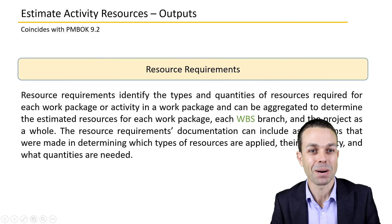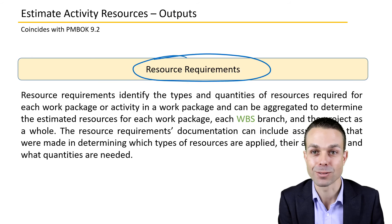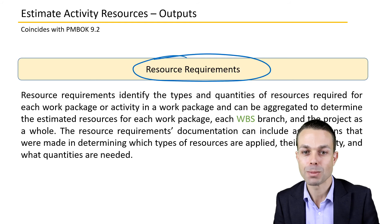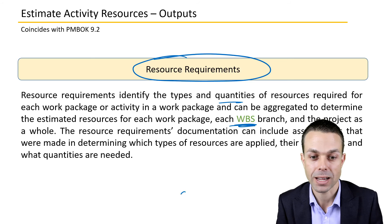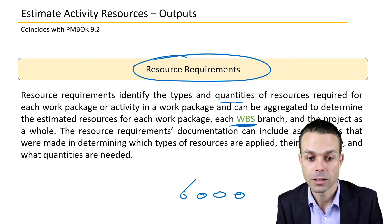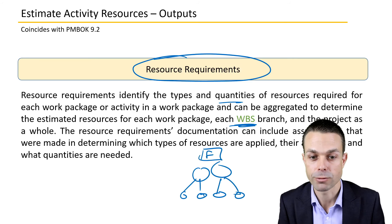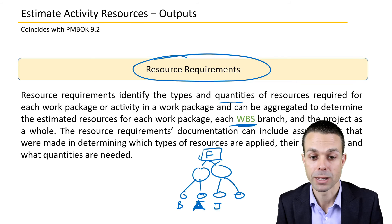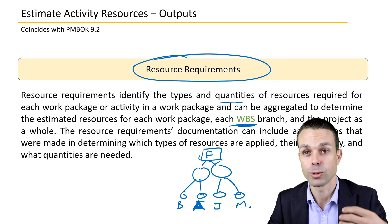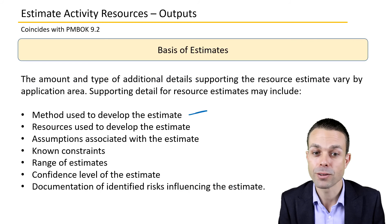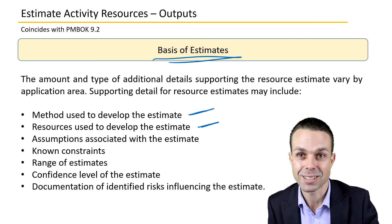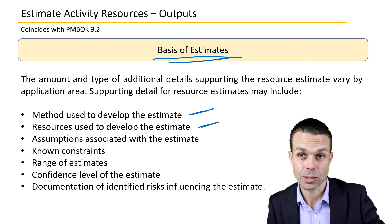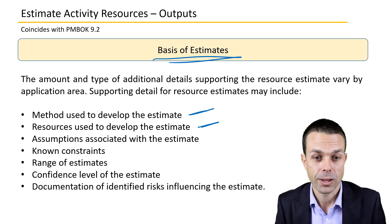The primary output is the resource requirements, which identify the types and quantities of resources required for each work package — typically at the lowest level of the work breakdown structure. For each activity, we identify who is required: for instance, Billy, John, and Mary, whoever has the expertise. We also produce the basis of estimates, which documents the method used, the resources consulted (such as the functional manager who confirmed availability), and any assumptions made.